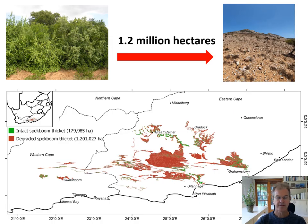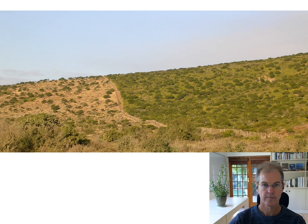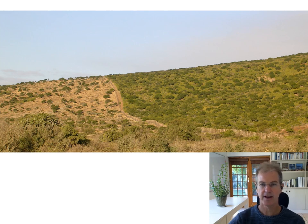The extent of the degradation is startling and alarming. Aerial photographs from the 1940s show that this entire landscape south and southwest of Kirkwood should be dark green, not the brown that it is. Here's a zoomed-in picture showing fence line contrasts on three sides of one degraded farm. We've calculated that more than 1.2 million hectares of Speckboom thicket have been degraded like this. This fence line contrast shows how the degradation results in a clearing out of some plants and not others.